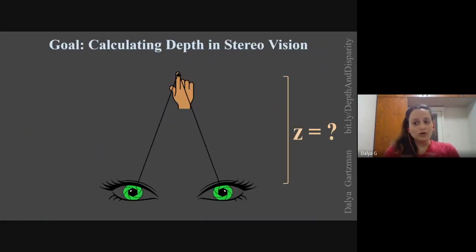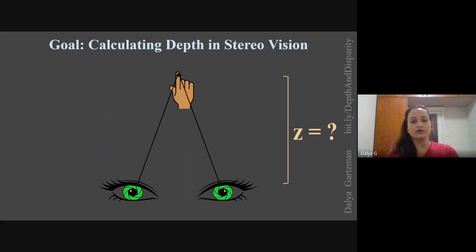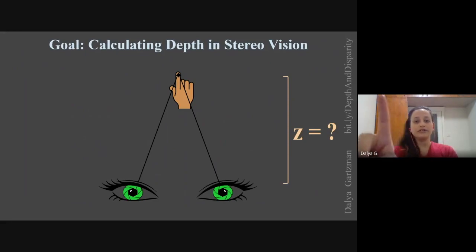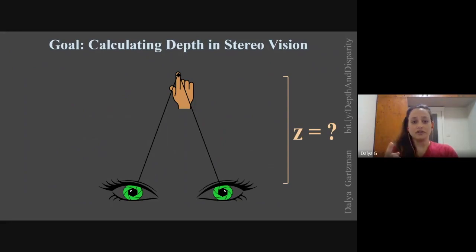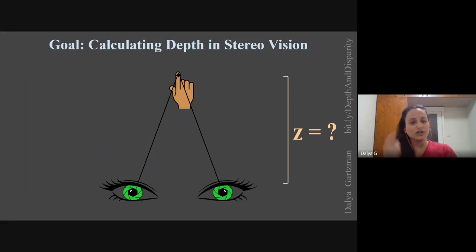The goal of what we're going to talk about today is to calculate the depth of objects in images, in the context of stereo vision. This is basically why we have two eyes — so we can have two images of the world where objects appear with some disparity, allowing our brain to calculate the depth of objects in front of us.